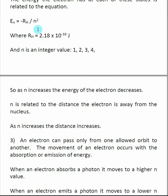Looking at this equation, as the electron moves away from the nucleus — as n becomes larger — the energy interaction between the nucleus and the electron decreases. As the electron gets further away, the positive and negative charges have less electrostatic interaction, so the electron becomes less energetic. n is related to the distance the electron is from the nucleus: as n increases from 1 to 2 to 3 to 4, the distance increases and the energy of the electron decreases.